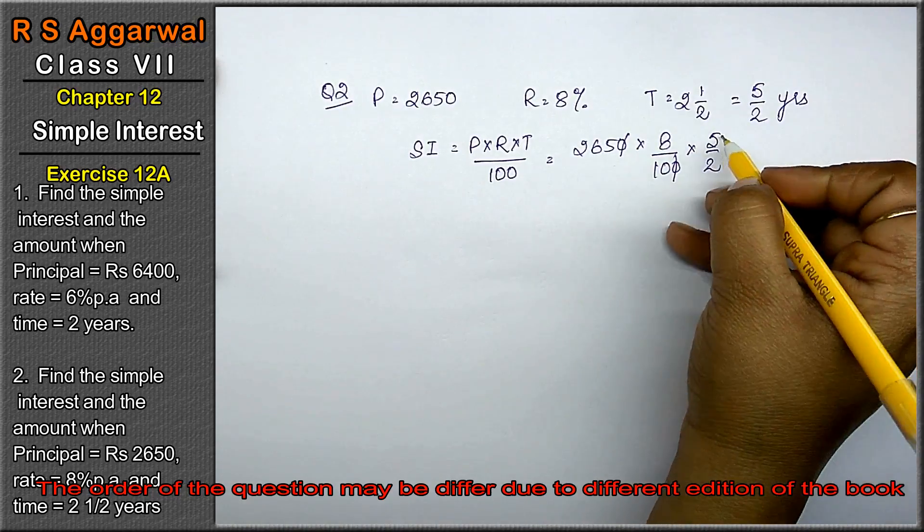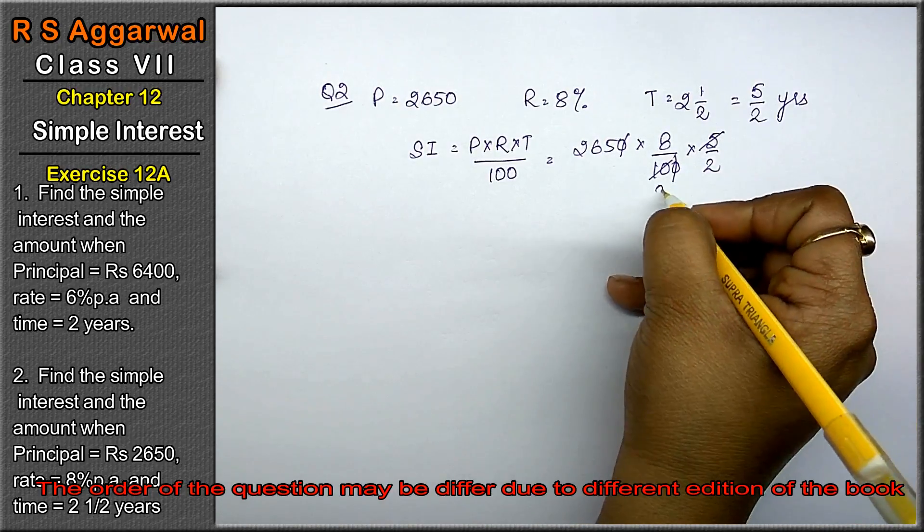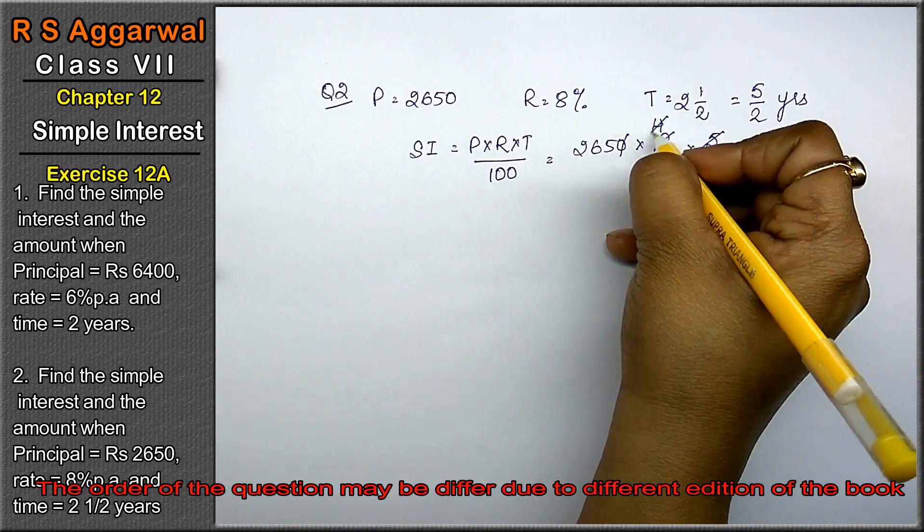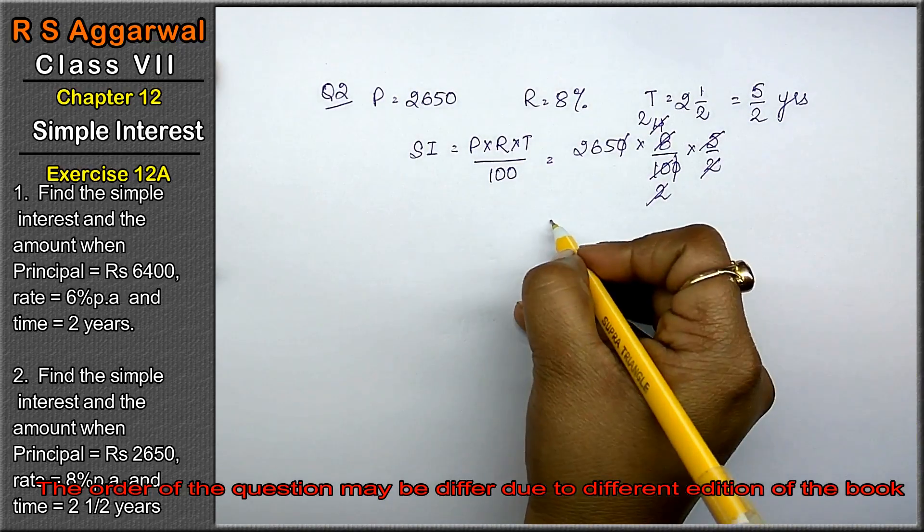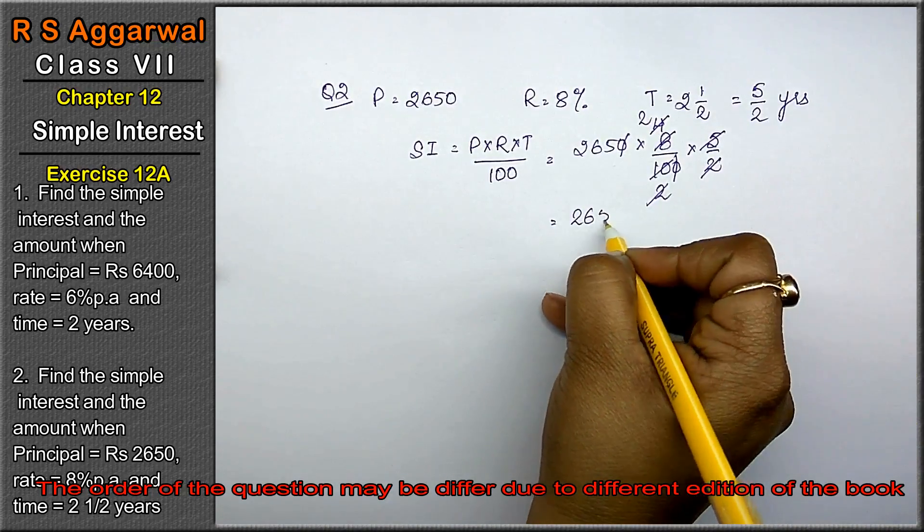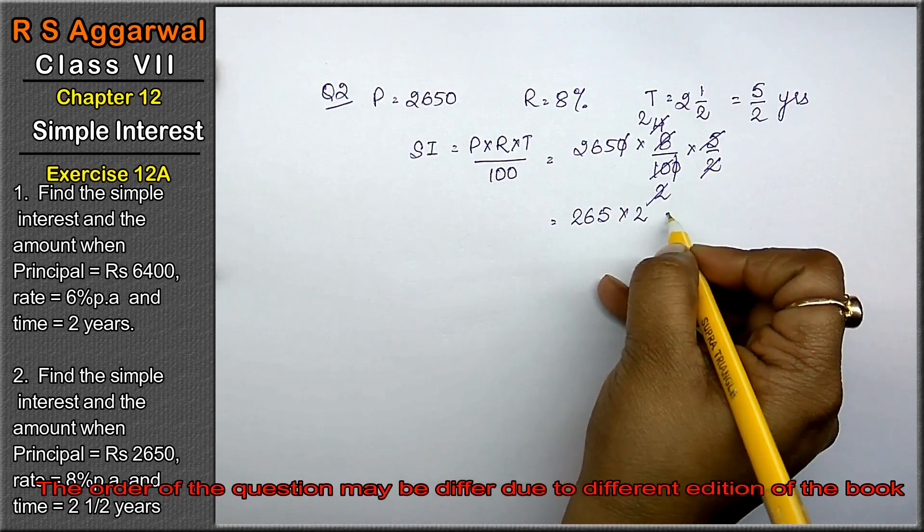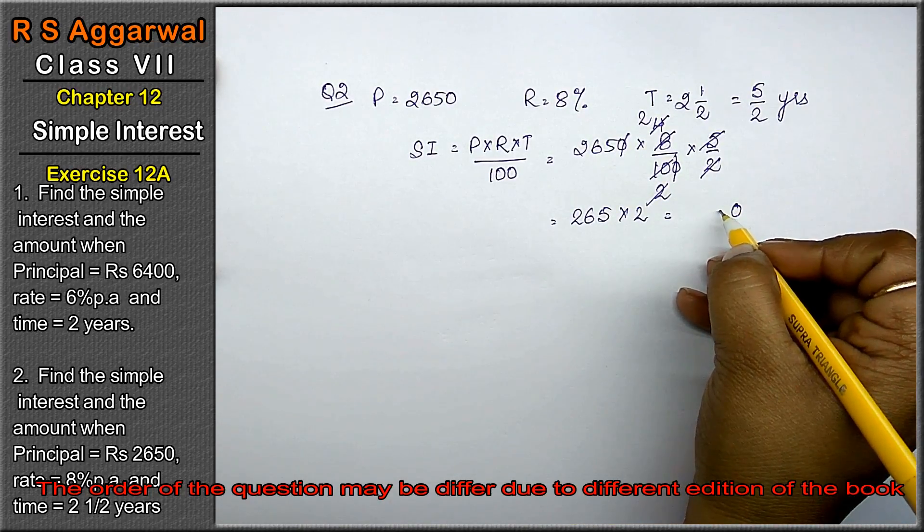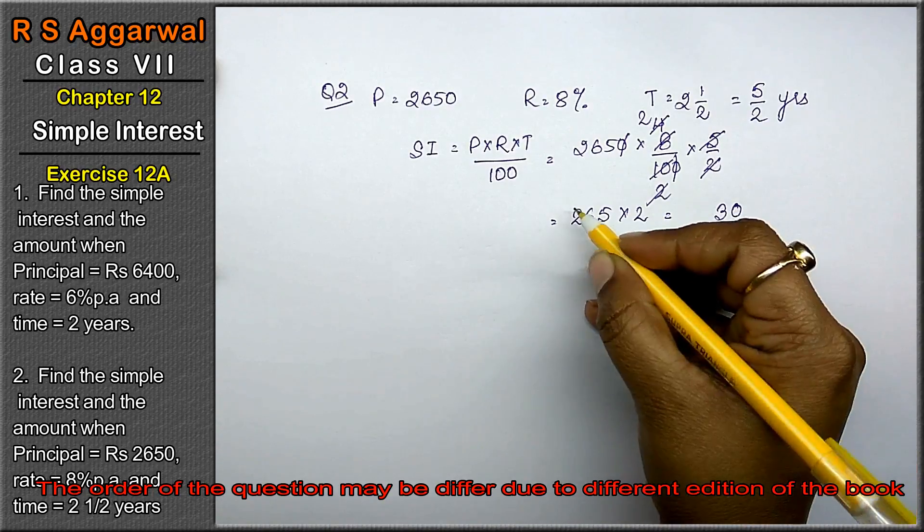Now calculating: canceling zeros, we get the calculations. 265 into 2 gives 530.